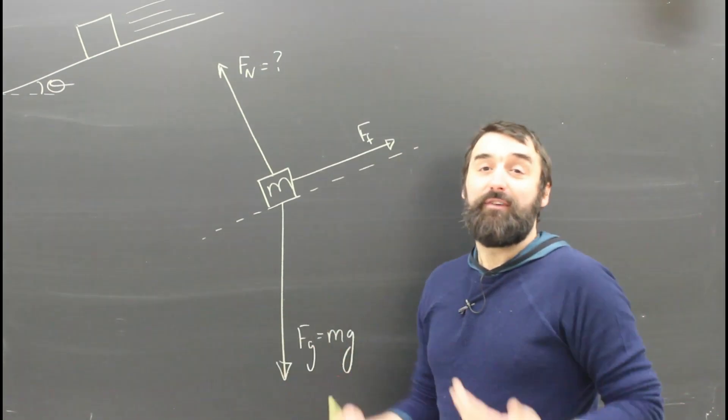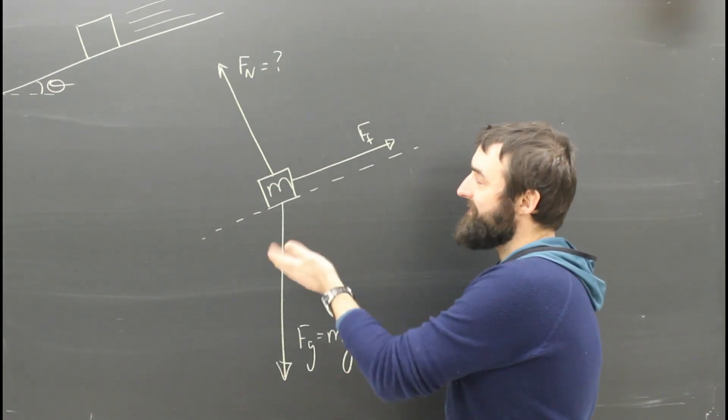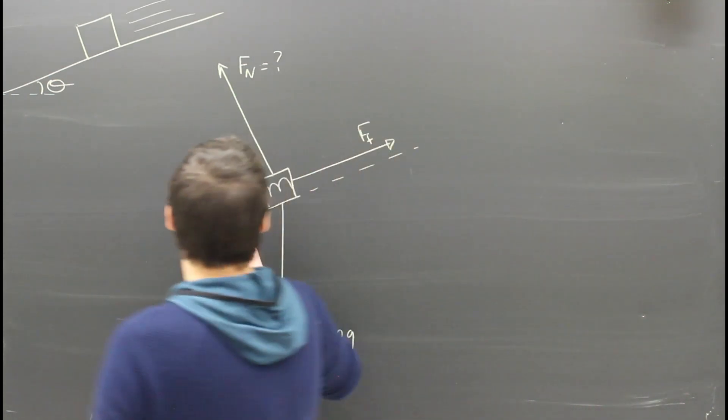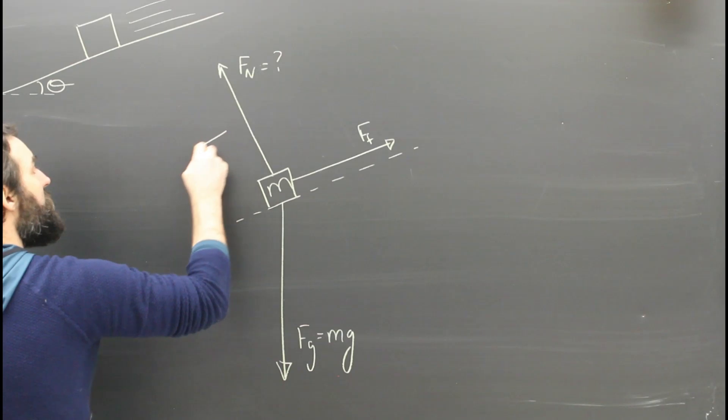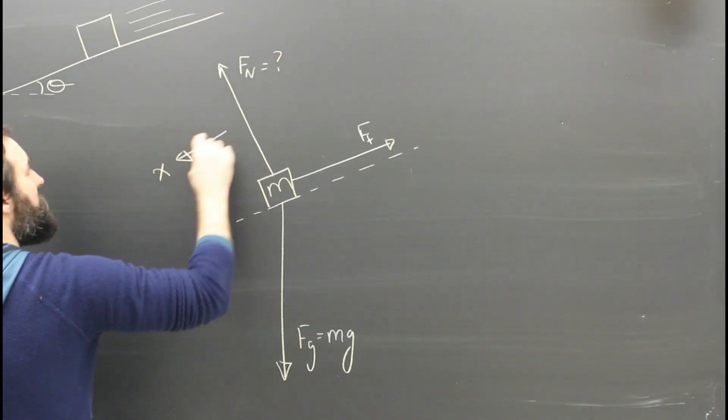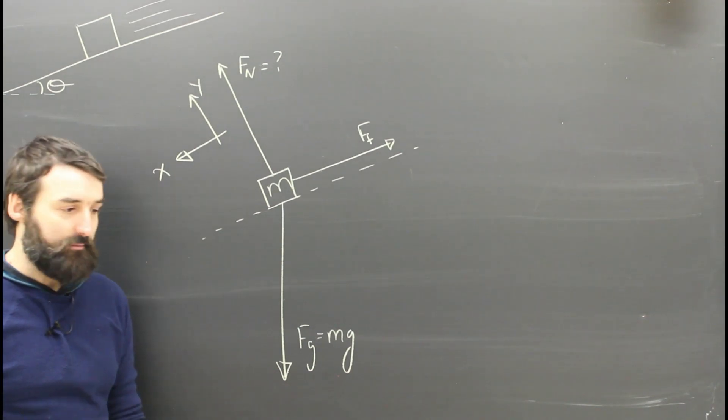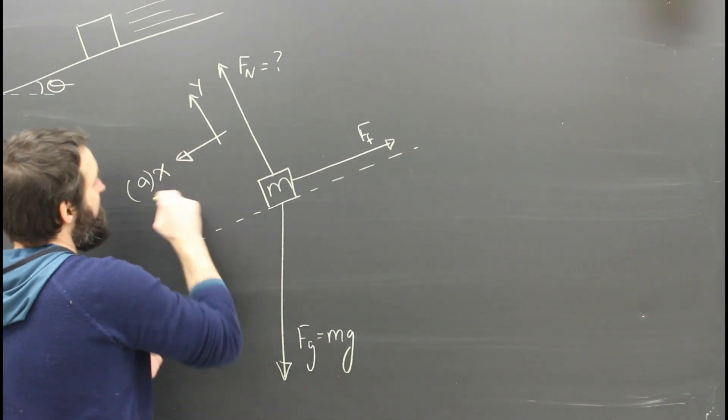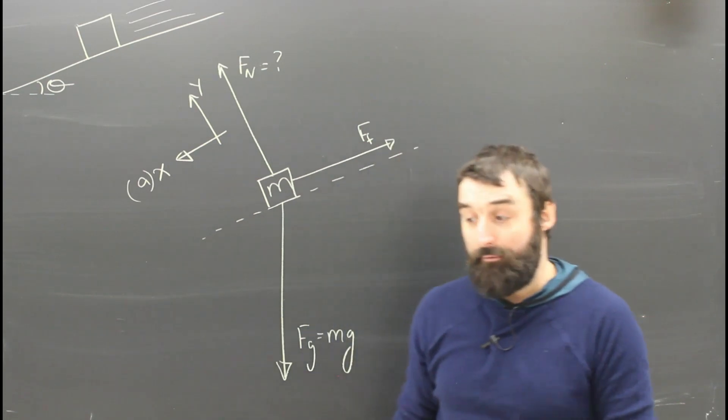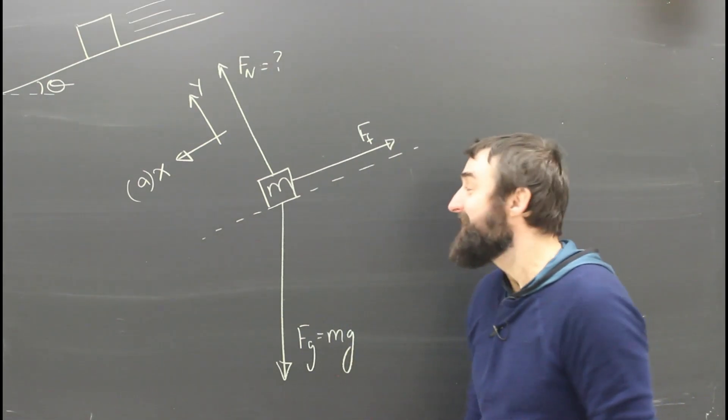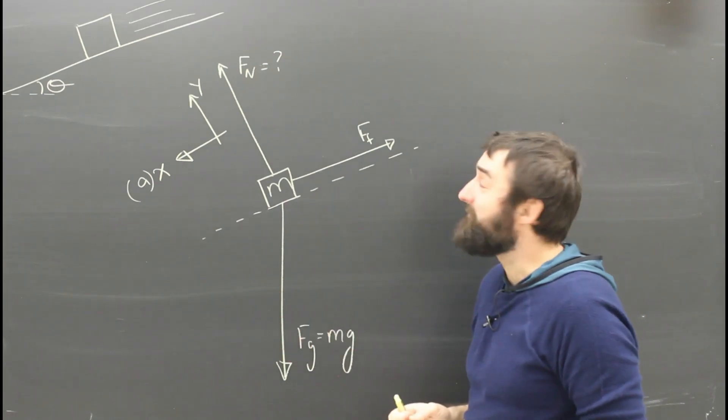Step two is to define my x and y direction. Which way is this thing going to accelerate? This is accelerating down the ramp. So I'm going to call down the ramp the x direction. I'm going to call y perpendicular to the ramp. So now that I've said which way is x, step three of any free body diagram is to break stuff into x and y components.